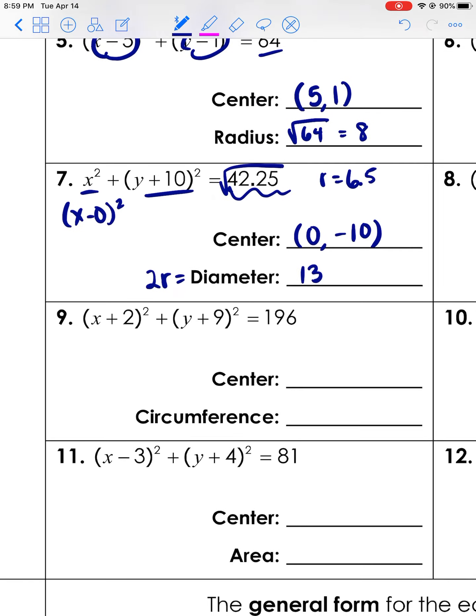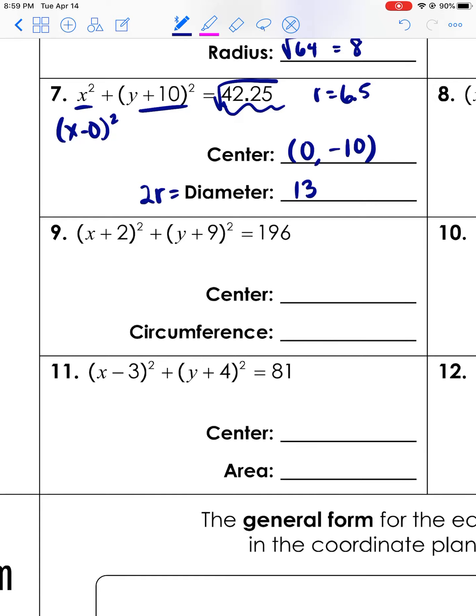Let's quickly do one where you find the center and then the circumference, and then I promise we'll be finished. Center - again, the opposite of that - so it's negative two, negative nine. The formula for circumference is 2πr, so we need the radius to get to it. The radius is the square root of 196, which is 14. So it's 2 times π times 14, and I'm actually going to ask that you guys leave your answer in terms of π, like this. So 2 times π times 14 is 28π. I want your answer with π.